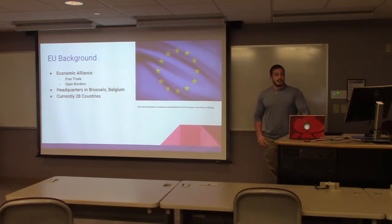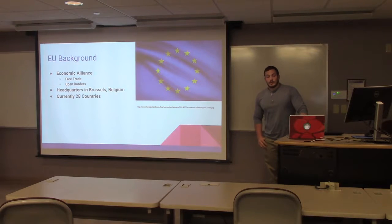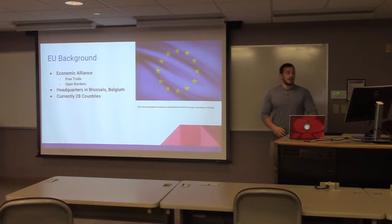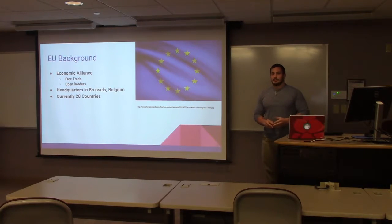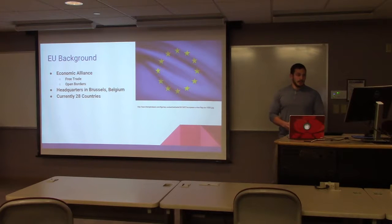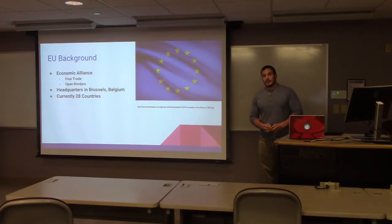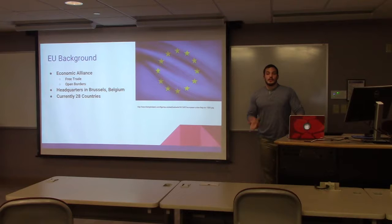The European Union was created just after World War II between the European countries to form a sort of economic alliance, where they had free trade and open borders within member countries, and this helped those countries bounce back after the war. The headquarters for the European Union is in Brussels, Belgium, and there are currently 28 countries in the European Union — this was just after Brexit, which saw the UK leave, meaning it would have been 29.